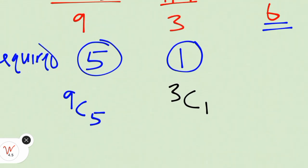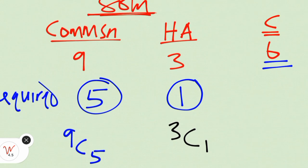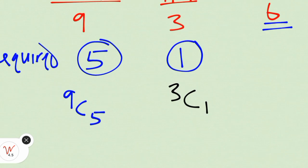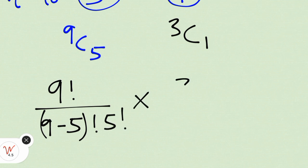So the total way of selecting five from nine and one member of the house of assembly from three members is nine combination five times three combination one. Nine combination five is actually nine factorial over nine minus five factorial times five factorial, times three factorial over three minus one factorial times one factorial.